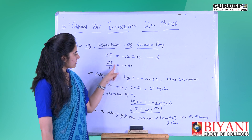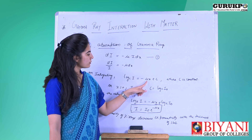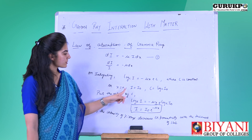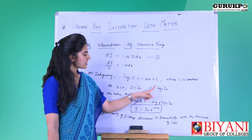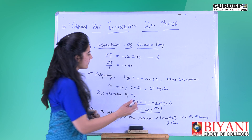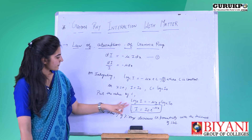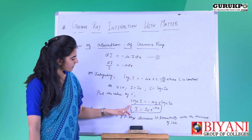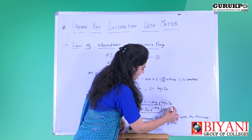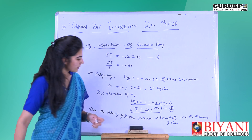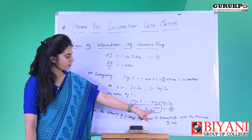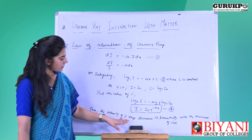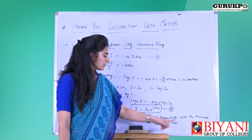On integrating, the value comes out as log I equals minus μx plus c, where c is a constant. Taking the case where x tends to 0 and I tends to I₀, the value of c comes to be log I₀. After putting the value of c into the equation, we get log I equals minus μx plus log I₀. On solving, we get the intensity as I equals I₀ e raised to the power minus μx. This equation shows that the intensity of gamma rays decreases exponentially with the thickness of the slab.